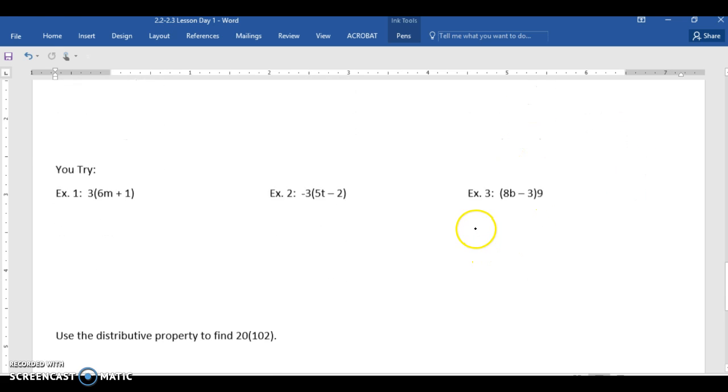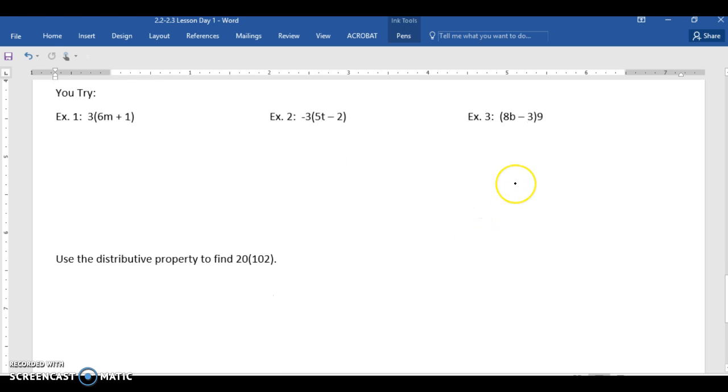So take a look at the U tries. Pause the video, then come back in and check your answers. So first example, 3 times 6M gives you 18M, 3 times 1 gives you plus 3. Negative 3 times 5T, negative 15T. Negative 3 times negative 2 is positive 6, so we're going to add 6. And the last one, I'm going to work backwards here. 9 times 8B is 72B. 9 times negative 3, since it's negative when you multiply, you're going to subtract. 9 times 3 would be 27.